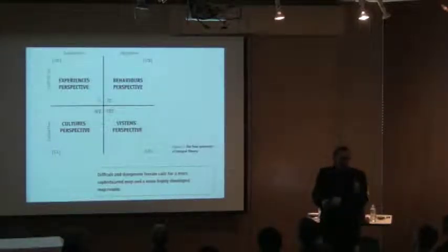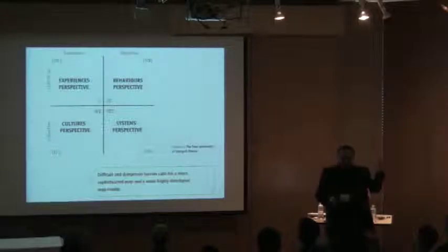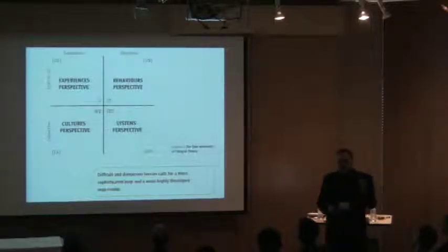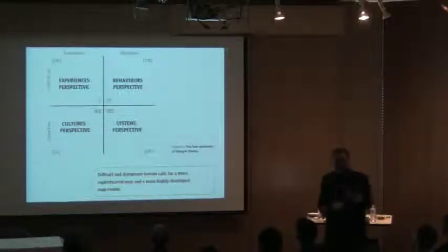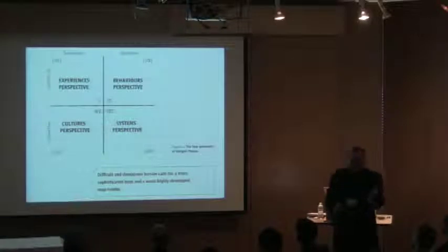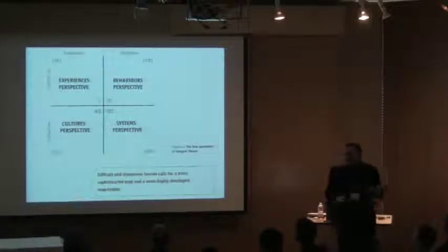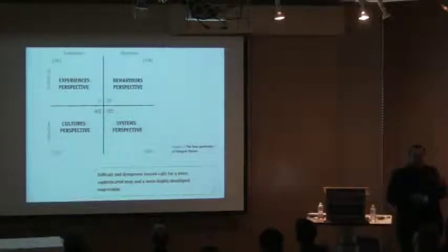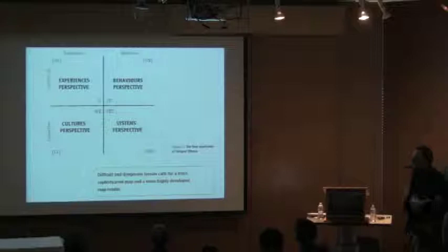This is a basic map, a basic model — and it is just a map. All of these things I'm talking about today are not like the truth of the universe, any more than the map is equal to the terrain that it's trying to describe. But if you're going to be flying over the Rocky Mountains, having some kind of a map is better than having no map at all, and having a better map is better than having a poorer map.